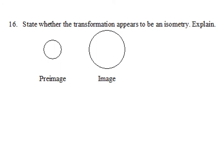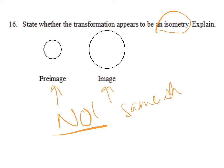Is the following an isometry? I have my pre-image and my image. The answer is no. Why? They are the same shape, but they are not the same size. In order to have an isometry, you must have same shape, same size.